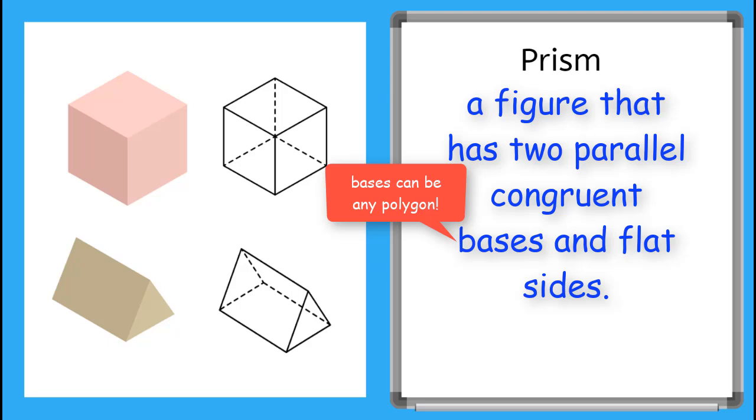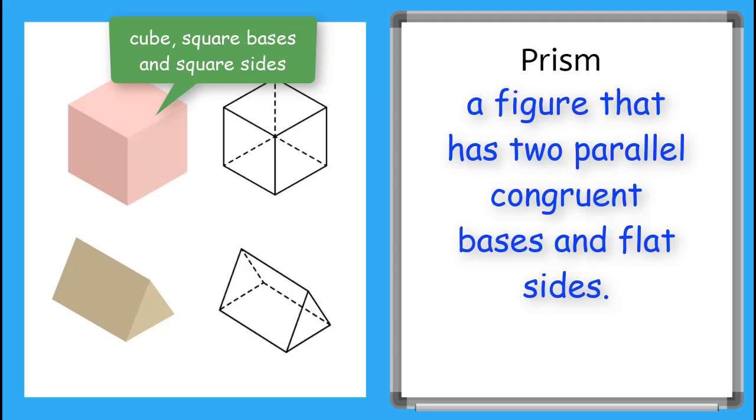One example of a prism you probably know is a cube. You can see the top and the bottom of the cube are parallel and congruent squares. But since a prism can have bases of any polygon,